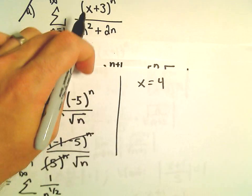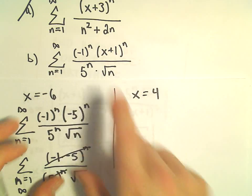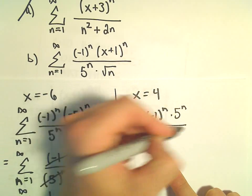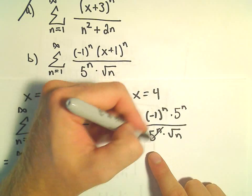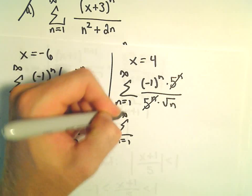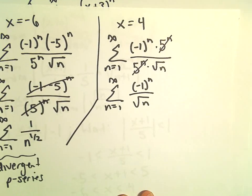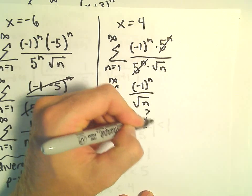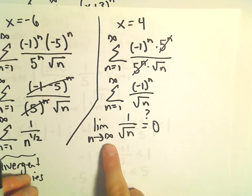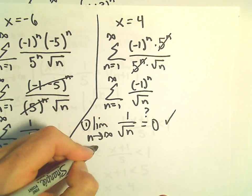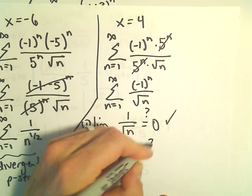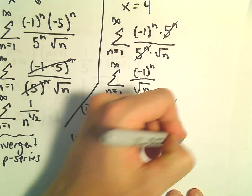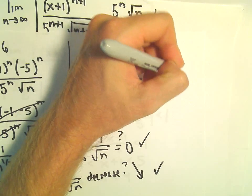When we plug in positive 4, we get the series from n equals 1 to infinity of negative 1 to the n times 5 to the n, over 5 to the n times the square root of n. The 5 to the n terms cancel, leaving negative 1 to the n over the square root of n. This is an alternating series, so we check two conditions: the limit as n goes to infinity of 1 over square root of n equals 0 — yes, as n grows large the denominator gets big. And does 1 over square root of n decrease? Yes, plugging in 1, 2, 3, 4, etc., the denominator gets larger, so 1 over that gets smaller. This is a convergent alternating series.